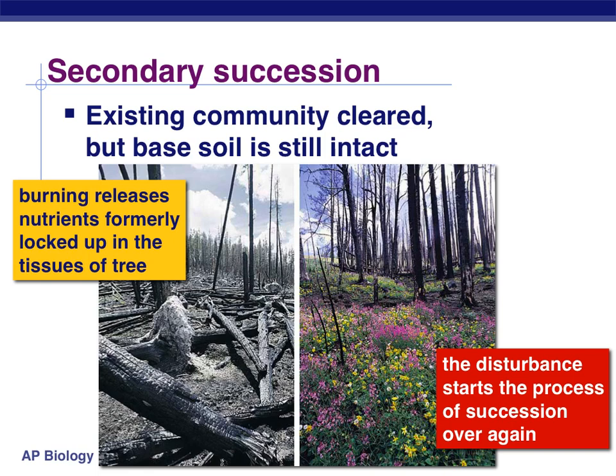Secondary succession is what happens when an existing community is destroyed or cleared, but the base soil itself is left intact — after a fire, flood, volcanic eruption, earthquake, or human clearing. All of those would be examples where secondary succession takes place. When that happens, if left alone, succession starts all over again — but this time it's faster because we don't have to make soil. Instead of starting from scratch, we can begin with grasses and shrubs and eventually trees. It's a faster process the second time around.